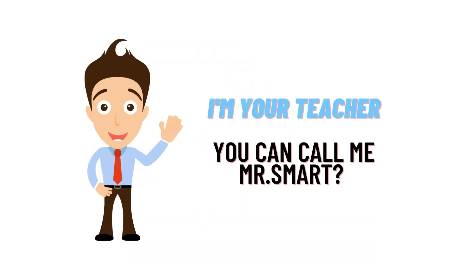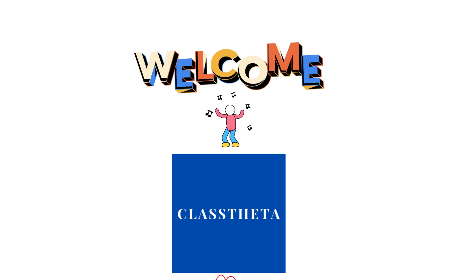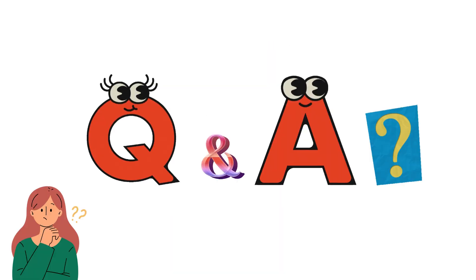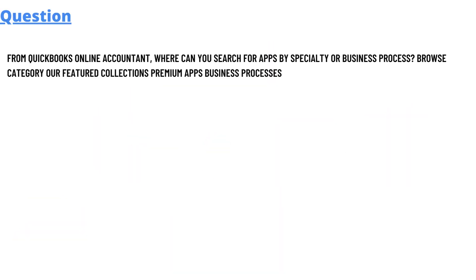Hello everyone, my name is Mr. Smart and I'm your teacher. I'll be teaching you different question and answer in this question and answer series. For today's question, which we'll be discussing, is from QuickBooks Online Accountant: where can you search for apps by specialty of business process? The options are: browse category, featured collection, premium apps, and business process.